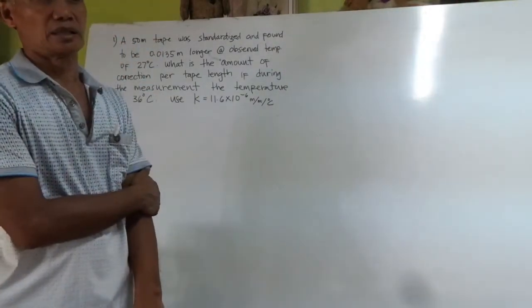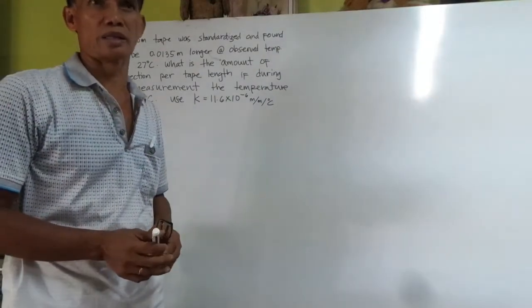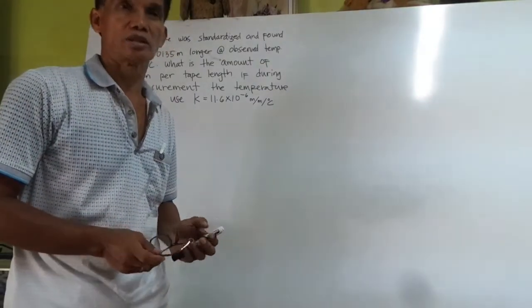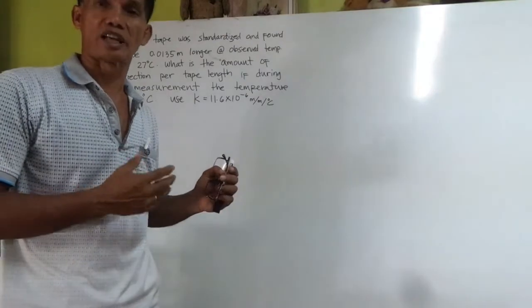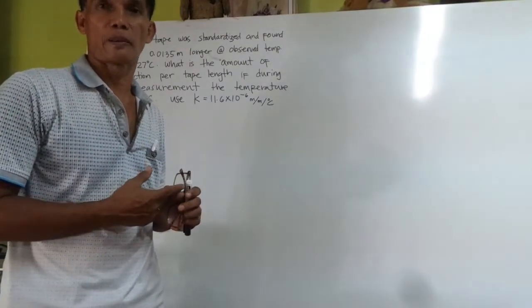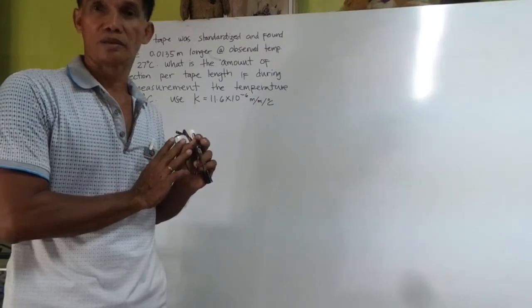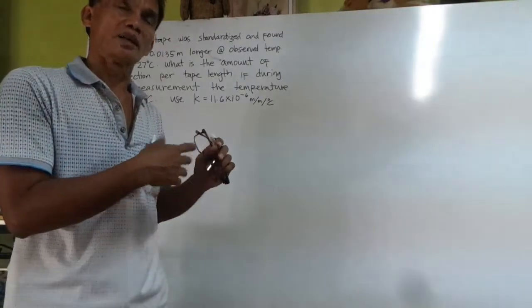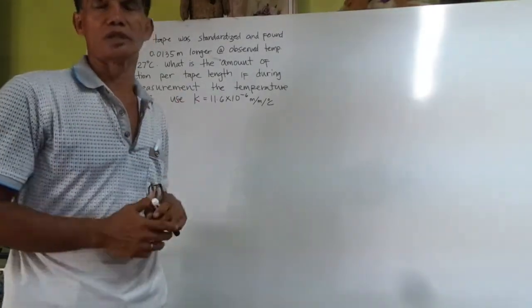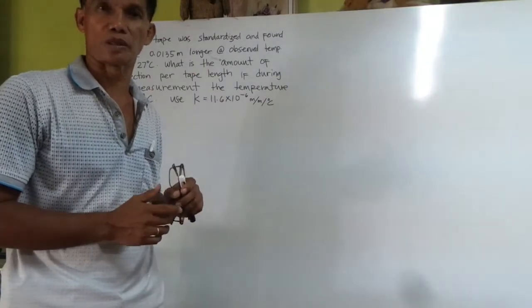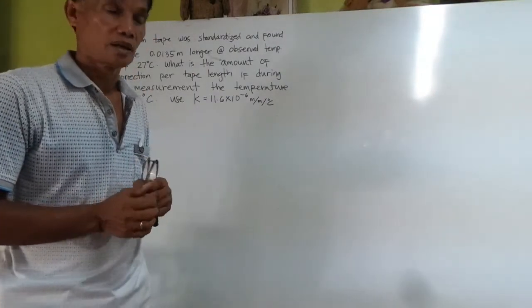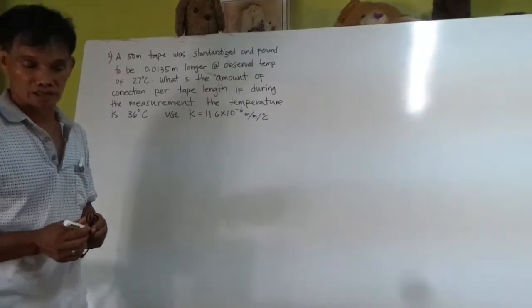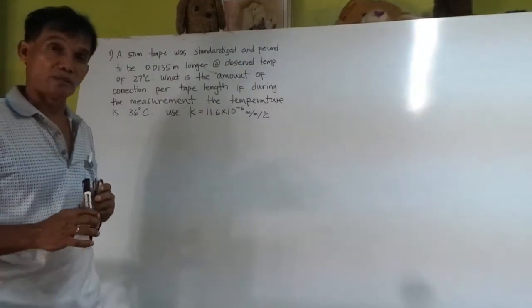There are errors in using the tape. One of the errors in using the tape is the error due to the temperature change. Tape is standardized by the manufacturer at a standard temperature. This is placed on the tape itself, especially if it is steel tape. We have a problem here about the correction of the steel tape when there is a change in the temperature.